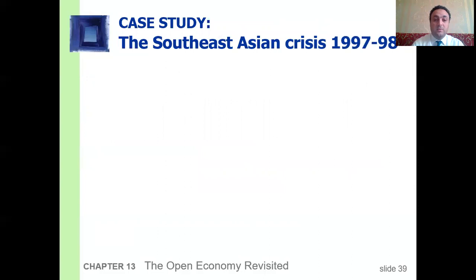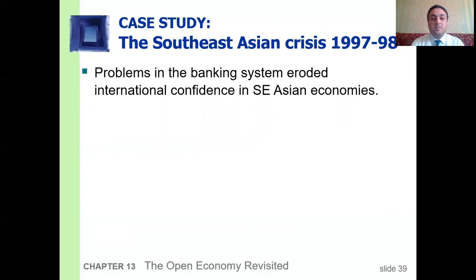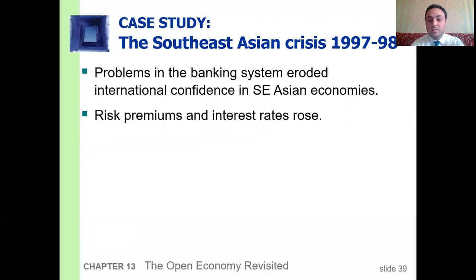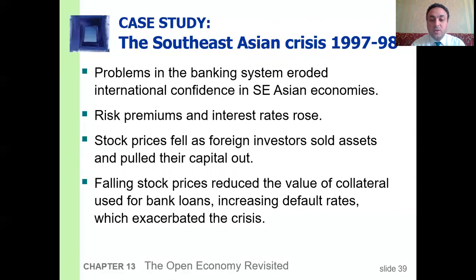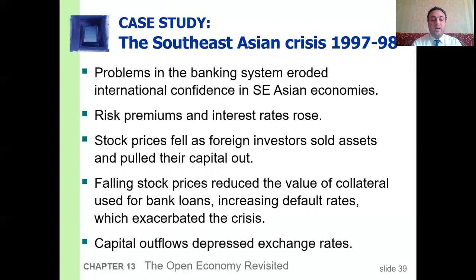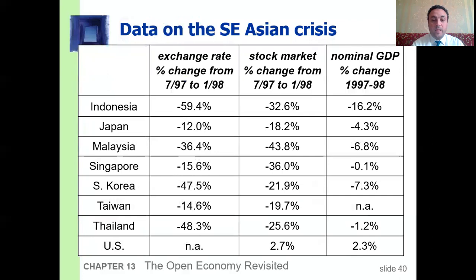Another case study: the Southeast Asian crisis of 1997. Problems in the banking system eroded international confidence in the Southeast Asian economies. Risk premiums and interest rates rose; stock prices fell as foreign investors sold assets and moved capital out. The value of collateral used for bank loans fell, increasing default rates, which accelerated the crisis. Capital outflows depressed exchange rates. The data shows significant depreciation in exchange rates, declining stock markets, and negative nominal GDP growth across several East Asian countries during the crisis.